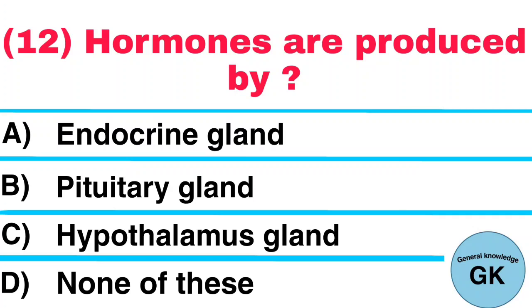Question number 12. Hormones are produced by A. Endocrine gland. B. Pituitary gland. C. Hypothalamus gland. D. None of these. Answer: Endocrine gland.